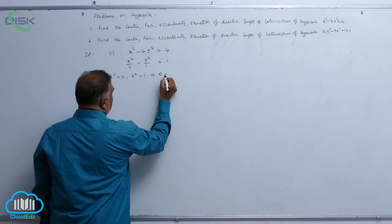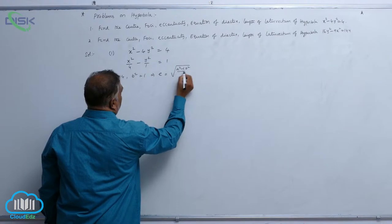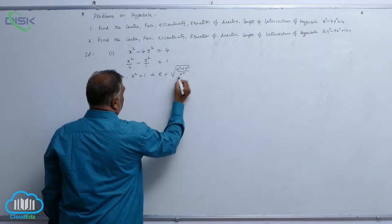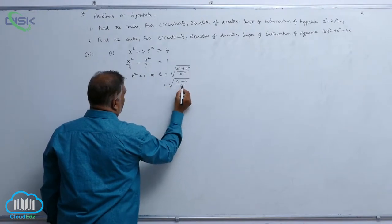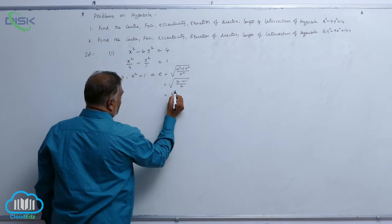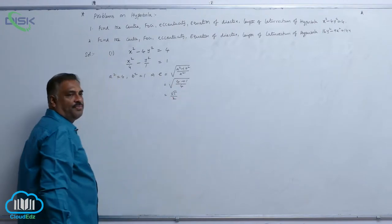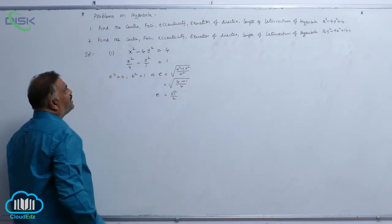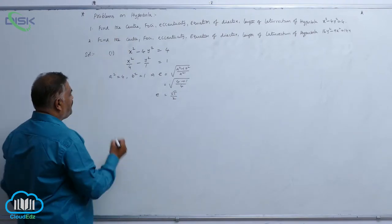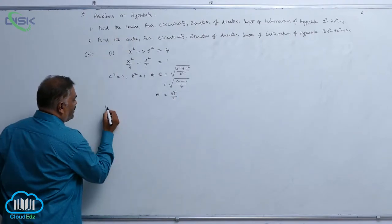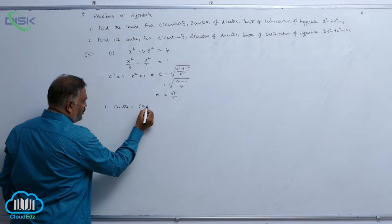Let us write e = √(a² + b²)/a² — that is √(4 + 1)/4 = √(5/4) = √5/2. Now we have the eccentricity value. The center is equal to (0, 0).